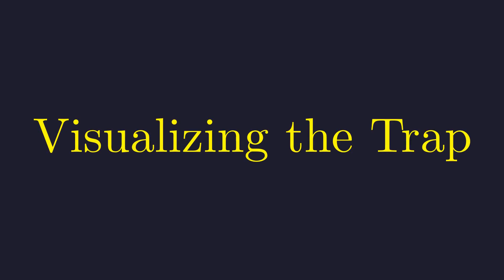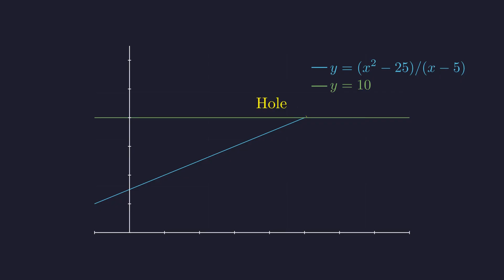Let's visualize this mathematically beautiful paradox. We're looking for where our rational function intersects the horizontal line y equals 10. After simplification, our function becomes the line y equals x plus 5, shown in blue. The green line shows y equals 10. But here's the key insight: because x can't equal 5, there's a hole in the blue line exactly where x equals 5.